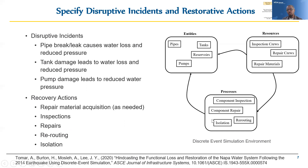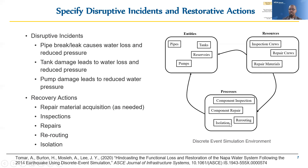We use discrete event simulation to model these disruptive events as well as the recovery, because it's good at capturing the dynamic change within the state of a complex system over time, as well as how different interventions can change the state of that system. The main features of a DES model are entities, resources, and processes — where entities are the physical components like pipes and tanks, resources are the human resources and repair materials, and processes are the activities used to change the state of the system and bring about recovery.